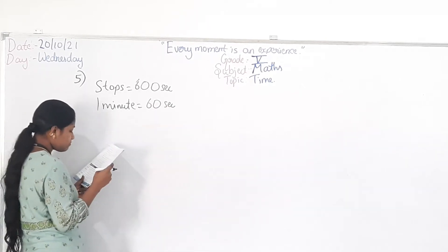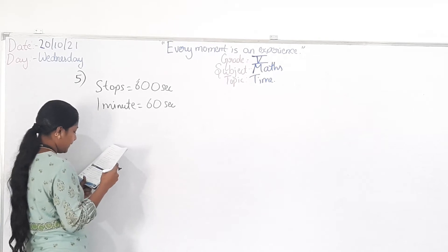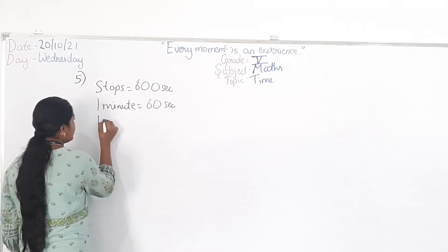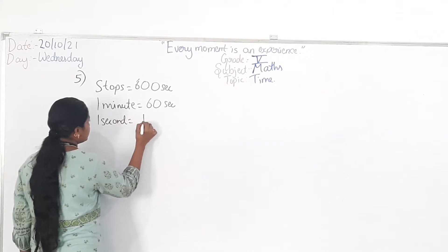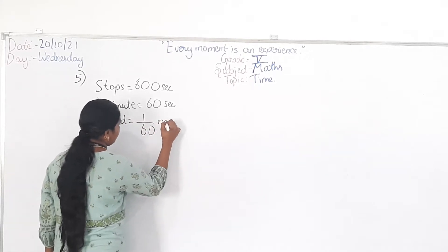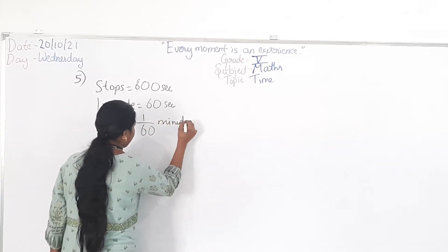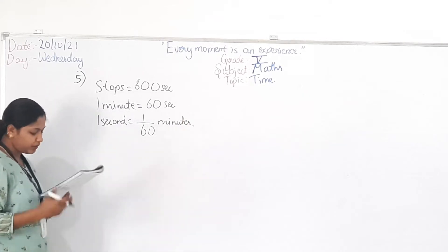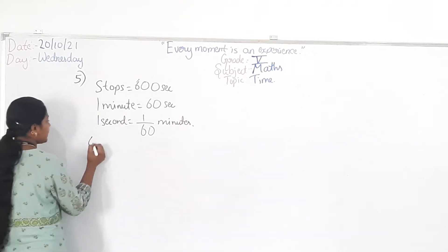Therefore, 1 second equals 1 by 60 minutes. So now how will you convert the 600 seconds into minute? So 600 seconds equals 600 divided by 60.